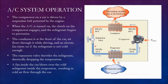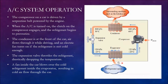The refrigerant leaves the condenser as a high pressure and temperature liquid and goes to the expansion valve, which throttles the refrigerant, drastically dropping the temperature — this is the part that actually makes the refrigerant cold. The expansion valve causes a phase change, and the refrigerant enters the evaporator as a low pressure and temperature saturated liquid. A fan inside the car blows over the cold refrigerant inside the evaporator, resulting in cold air flow through the car. The inside of the car is considered the refrigerated space where heat is lost.